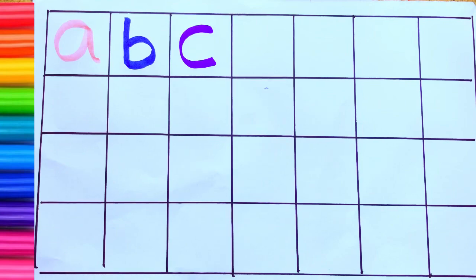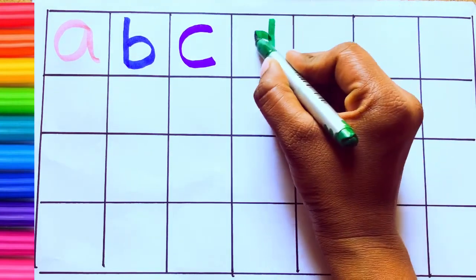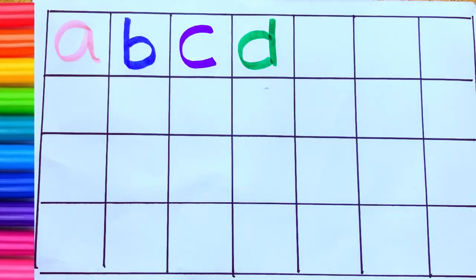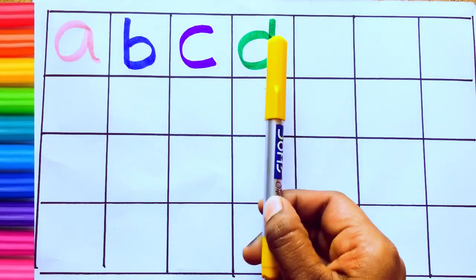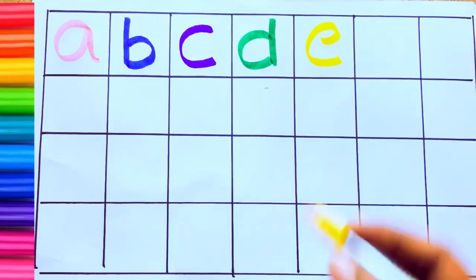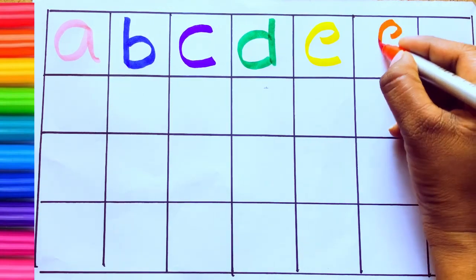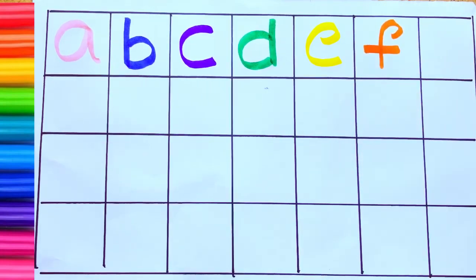Green color. D, D for dog. Yellow color. E, E for egg. E-G-G, egg. Orange color. F, F for fish. F-I-S-H, fish.